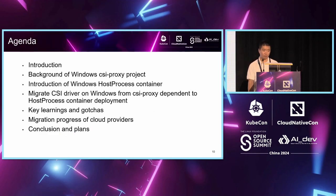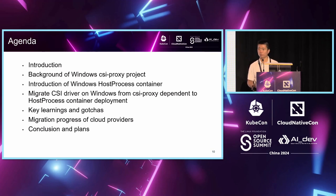Today's agenda: first I will introduce the background of the Windows CSI proxy project and why it was needed in the first place. Then I will introduce the Windows host process container, its benefits, and why we want to migrate Windows CSI drivers from CSI proxy dependency to host process container. I'll also show key learnings and gotchas encountered during migration, share the migration progress of cloud providers, and conclude with future plans.